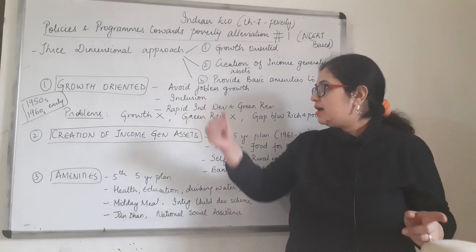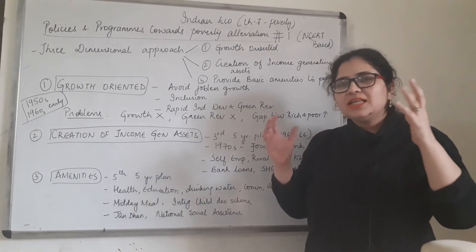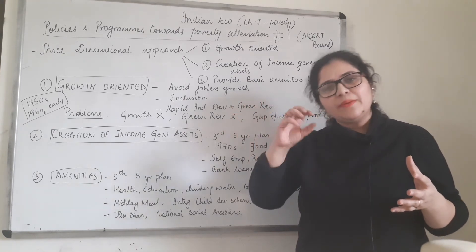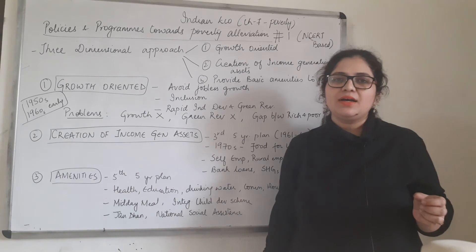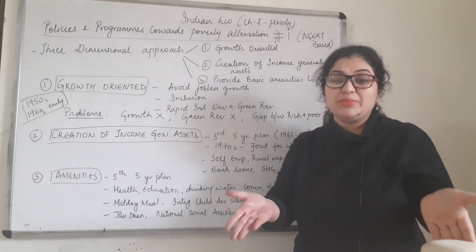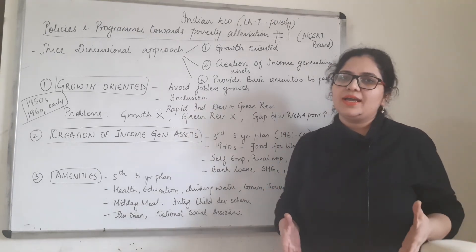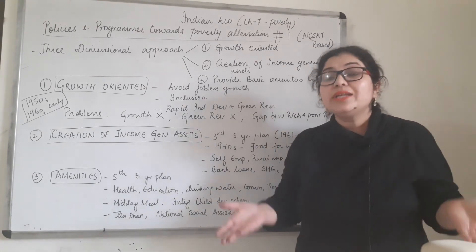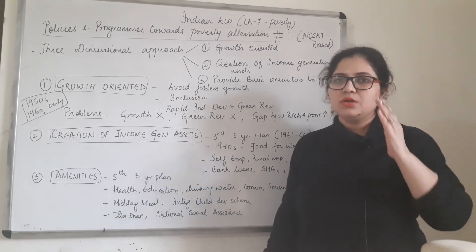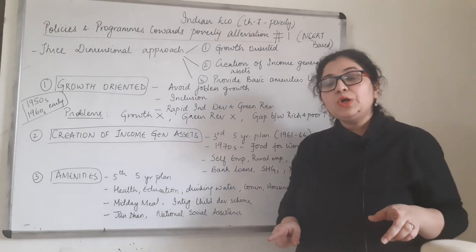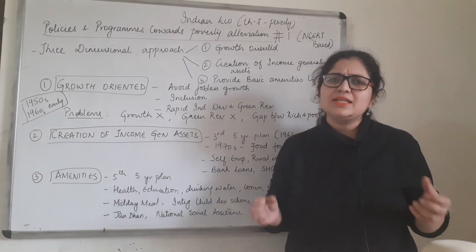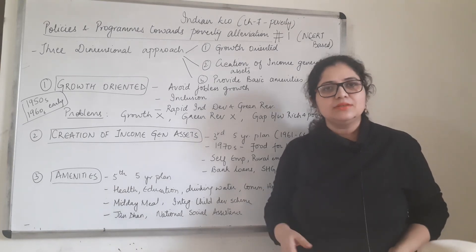There are many more programs run under the amenities approach — we will do a dedicated video on all those programs in detail. Overall, the approach and intention have been good and a lot has been done. But there are two big villains: population, which has always outpaced all efforts, and corruption and greed — the inability to look at another person's situation. That is why the three-dimensional approach has not been as successful as it should have been.